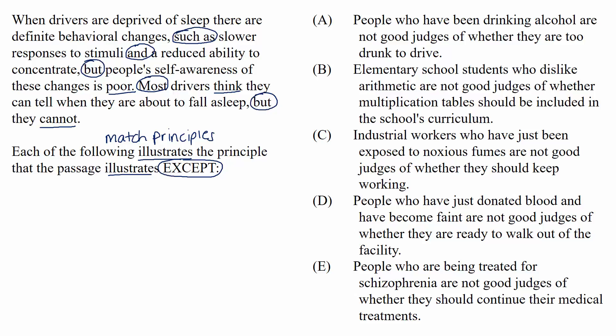If we were to phrase a general statement illustrating what's described here, it might be something like: sometimes people's physical conditions cause them to not be able to make good decisions. It doesn't have to be precise — principles are usually very general. Remember, we're working with an except question, so four of the choices will have the same principle and one won't. Let's evaluate each choice to see which one gives us a situation that doesn't illustrate that principle.